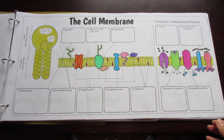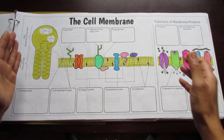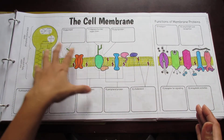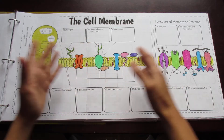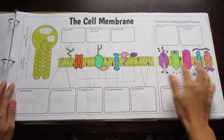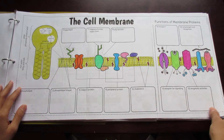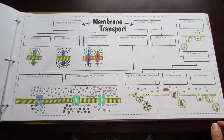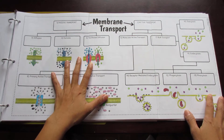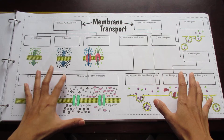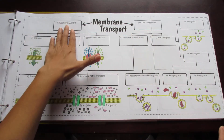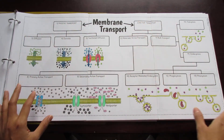This is the cell membrane. You can use this as a two-page foldable just showing the cell membrane structures, or as a three-page foldable showing the function of the different membrane proteins. Then here's a large graphic organizer that shows the different branches of membrane transport — passive, active, and all the ones in between.